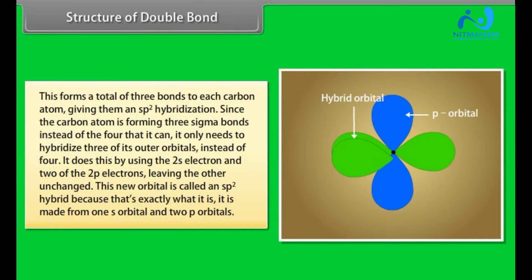Since the carbon atom is forming three sigma bonds instead of the four that it can, it only needs to hybridize three of its outer orbitals instead of four. It does this by using the 2s electron and two of the 2p electrons, leaving the other unchanged. This new orbital is called an sp2 hybrid because that's exactly what it is. It is made from one s orbital and two p orbitals.